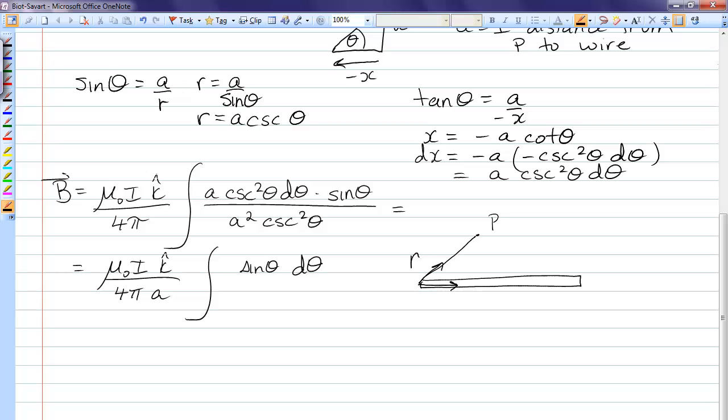has an angle theta. Theta is always between r-hat and dl. So this would be theta one. And the other end of the wire, dl has to carry on in the direction of the current. So dl has to point to the right always. r-hat points up to the point of interest. So that becomes theta two.